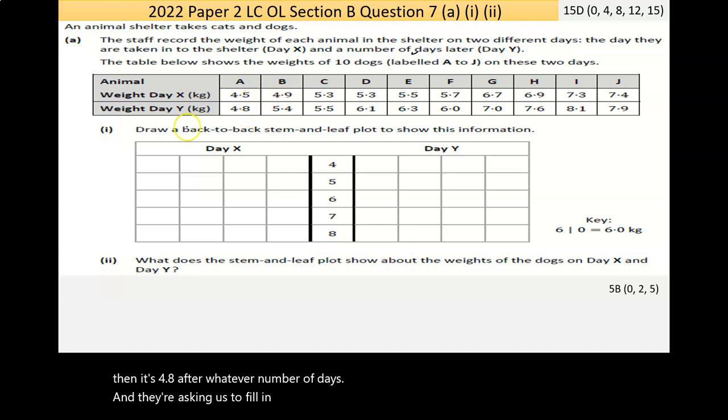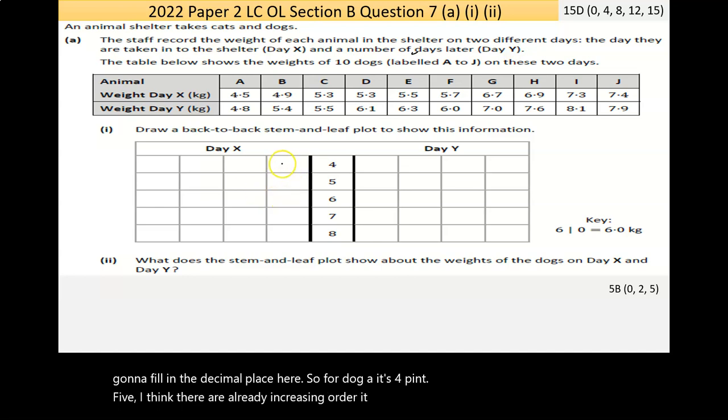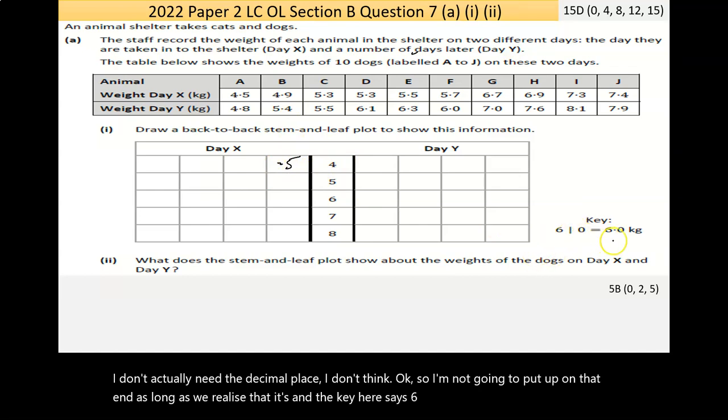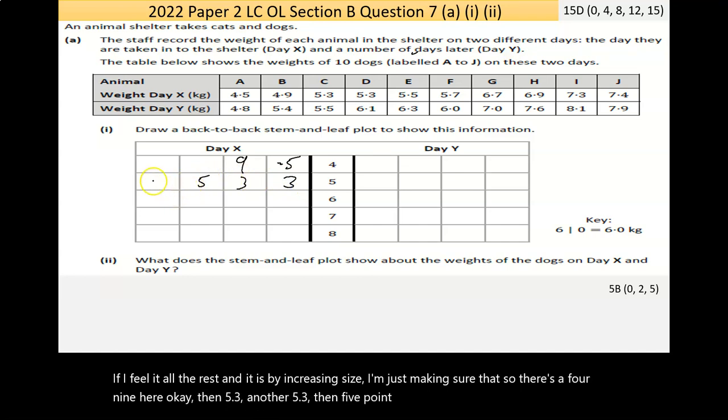Part 1 says draw a back-to-back stem and leaf plot to show this information. So really, in essence, how these work, they're given the number 4, 5, whatever, and you're going to fill in the decimal place here. So for dog A, it's 4.5. I think they're actually already in increasing order, I think. So this is .5. I don't actually need the decimal place. As long as we realize the key here says 6, 0 means 6.0. So 4, 5 means 4.5.